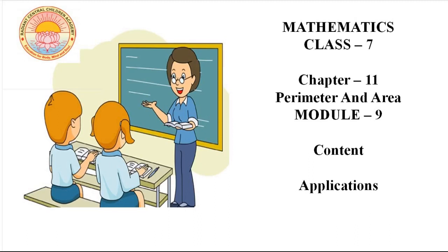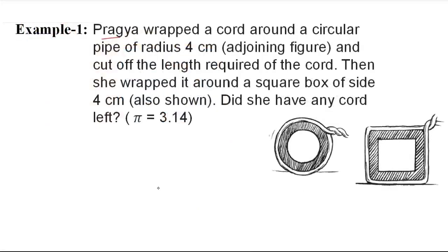Let's see the examples. The first example is: Pragya wrapped a cord around a circular pipe of radius 4 cm, as shown in the adjoining figure, and cut off the length required. Then she wrapped it around a square box of side 4 cm. Did she have any cord left?